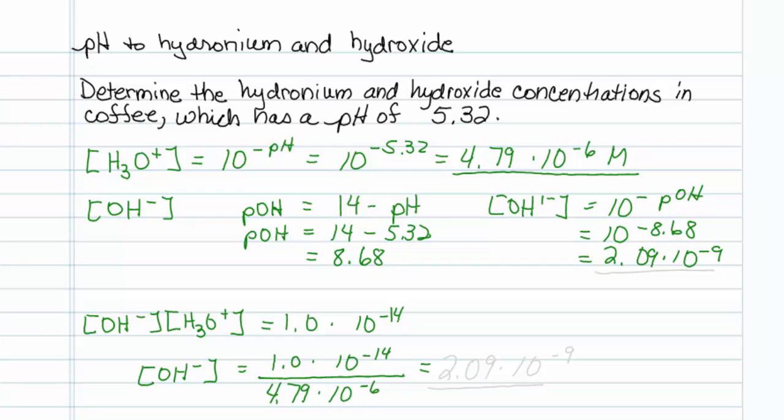1.0 times 10 to the minus 14 divided by 4.79 times 10 to the minus 6 equals, I get the same answer, 2.09 times 10 to the minus 9.